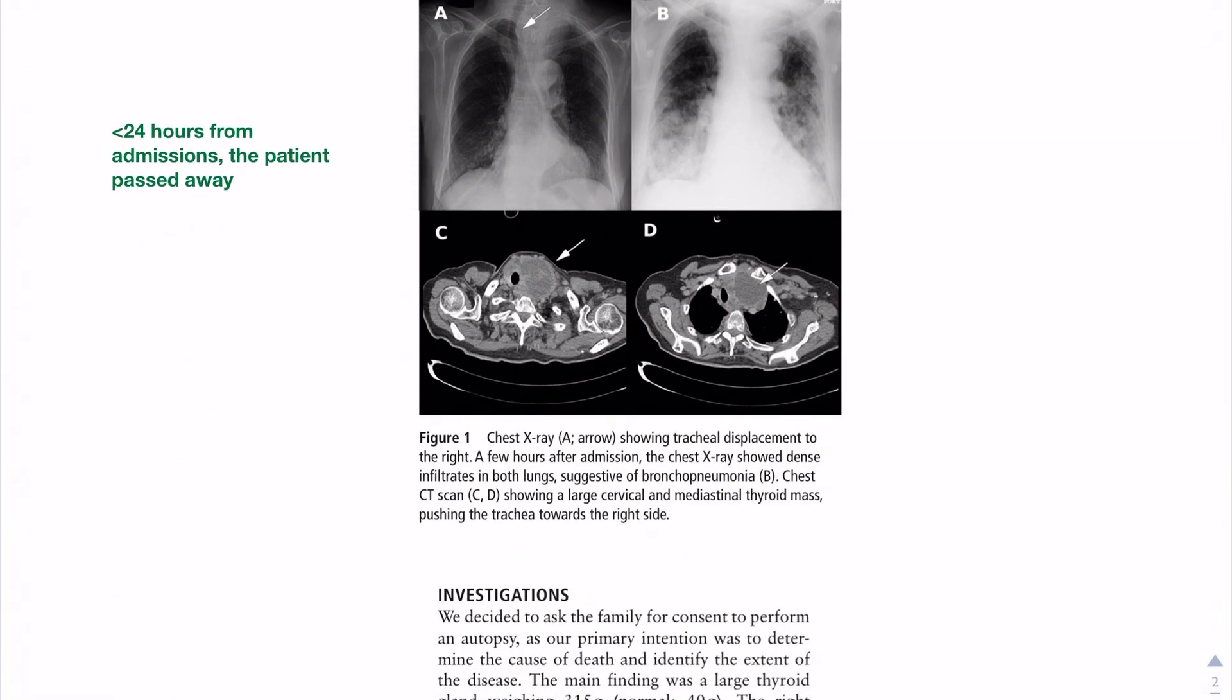On admission, they did chest x-ray, as you can see in A, and they found that his trachea was deviated to the right. Two hours later, they did another chest x-ray, and they found that there was dense infiltrates in both lungs, suggestive of bronchopneumonia.